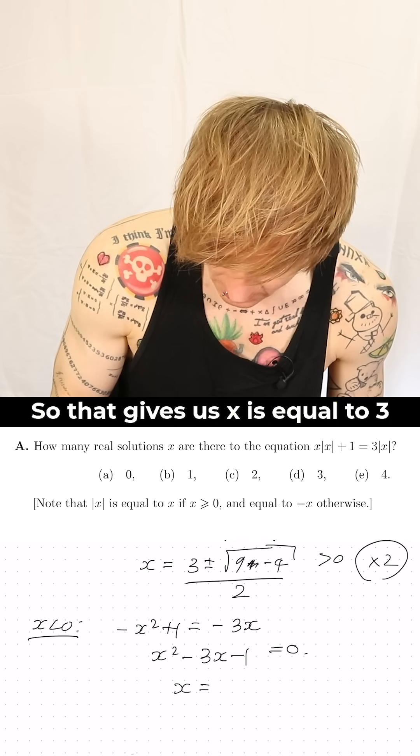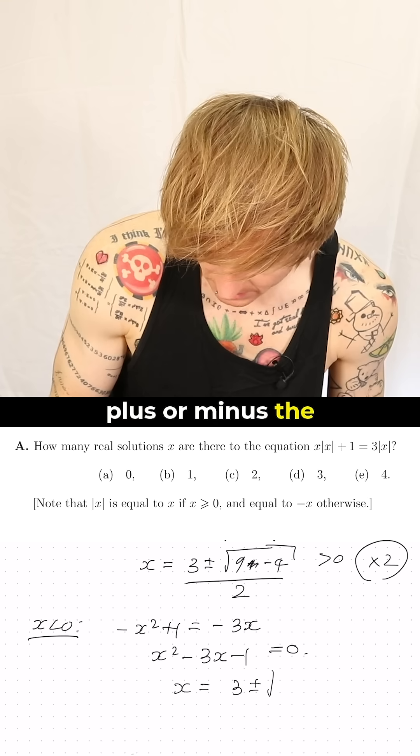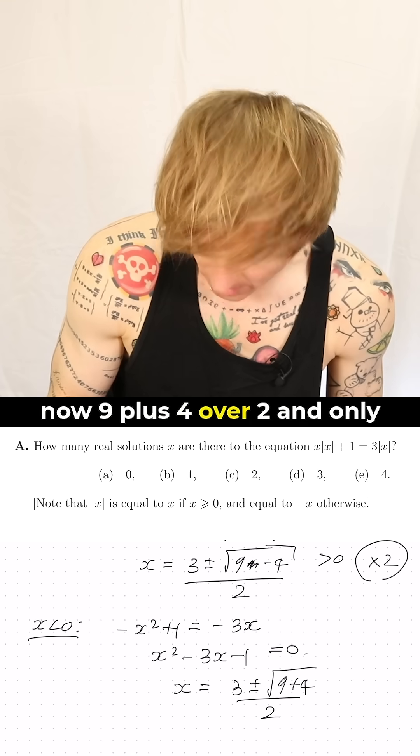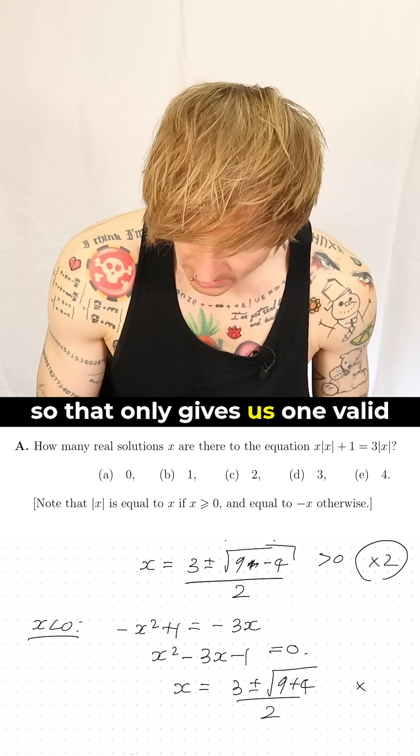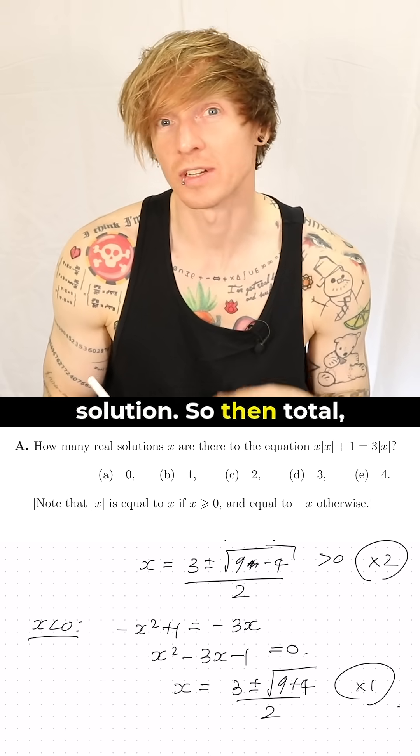So that gives us x is equal to 3 plus or minus the square root of now 9 plus 4 over 2, and only one of those is negative, so that only gives us one valid solution. So in total there are